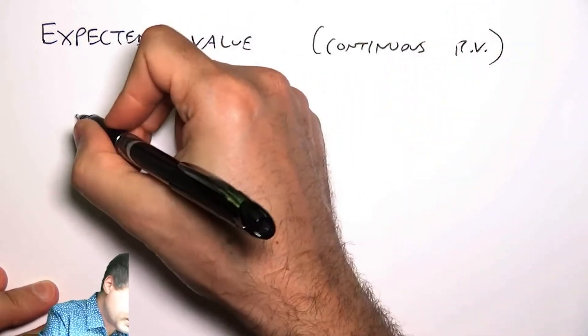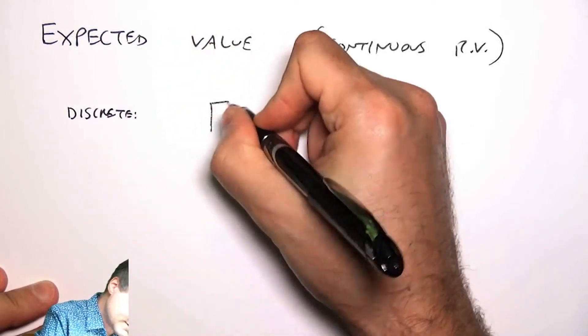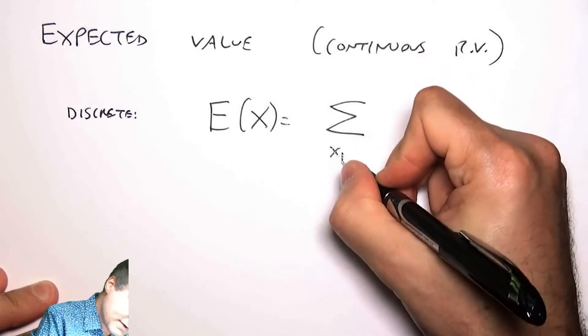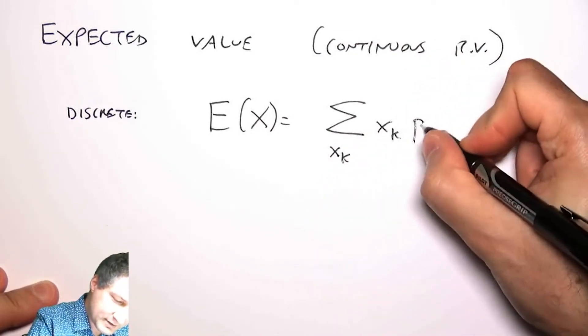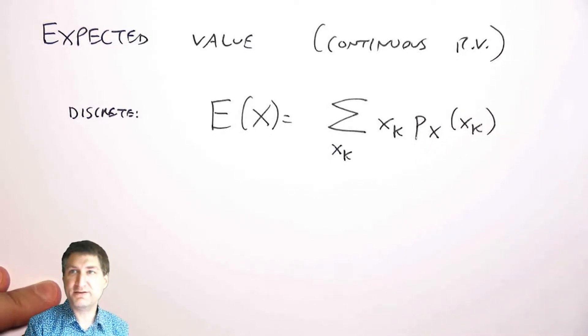So let's remember what we talked about in the discrete case. The expected value was the sum over all the possible outcomes that I could get, the value of the outcome times the PMF, or the probability of getting that outcome.